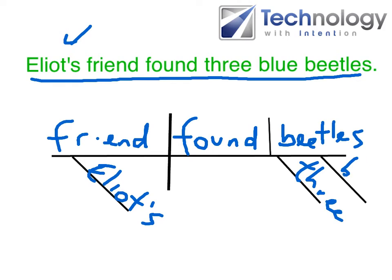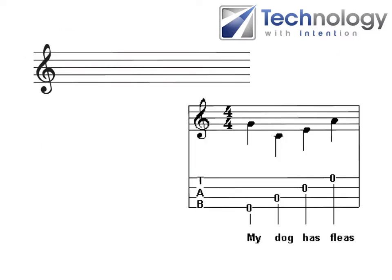Screencasting software can be used here to explain a concept or an example. It doesn't have to be the teacher — a student could diagram the sentence and send the video to the teacher, talking through their thought process. This gives teachers insight into how the work was done, as opposed to just a right or wrong answer.